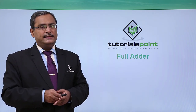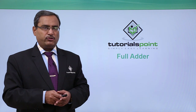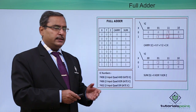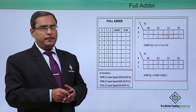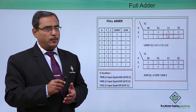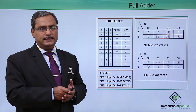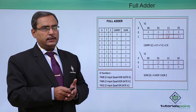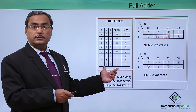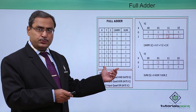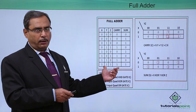Let us implement and simulate a full adder circuit on the PSPICE software. Here is the respective truth table. We know that in the case of a full adder, we shall be having three input lines and two output lines. The three input lines are X, Y, and Z, and the two output lines are carry and sum. This is the full adder truth table. As we are having three input lines, we shall be having eight input combinations.